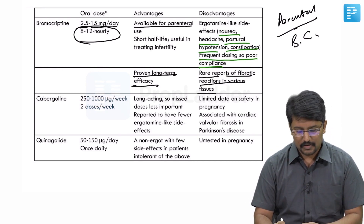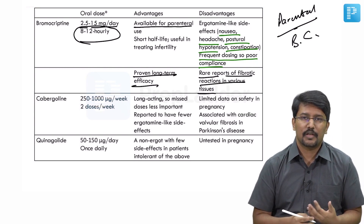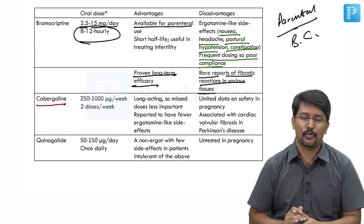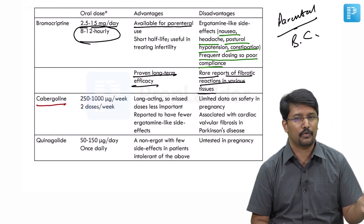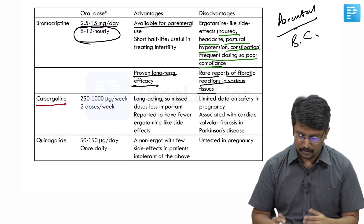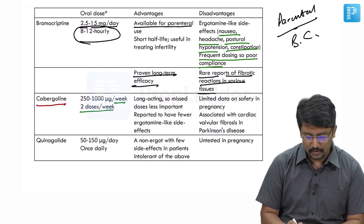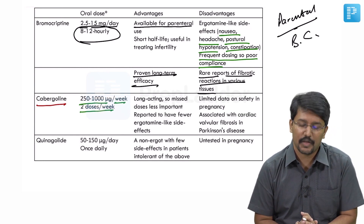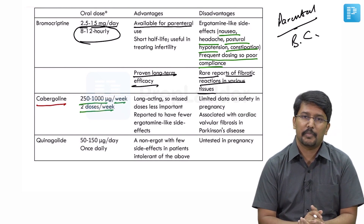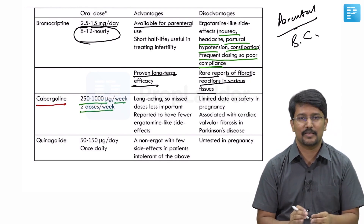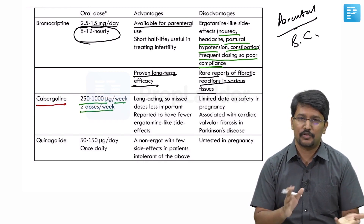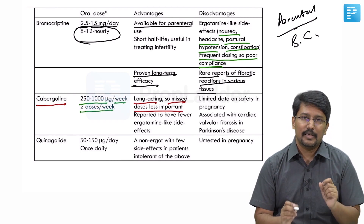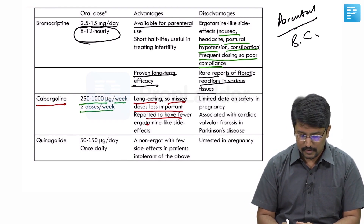There are concerns about fibrotic reactions including valvulopathies with bromocriptine, but at doses used for hyperprolactinemia it is not a major concern. Cabergoline has shown in several studies to be more effective in reducing prolactin levels and shrinking prolactin-secreting tumor size. The advantage is it can be administered as two doses per week at 250 to 1000 micrograms, ensuring better patient compliance. It is long-acting, so missed doses are less of a concern, and it has a relatively lower incidence of ergot-like side effects.